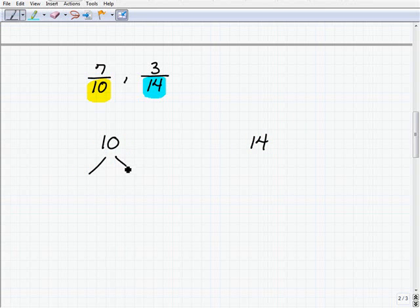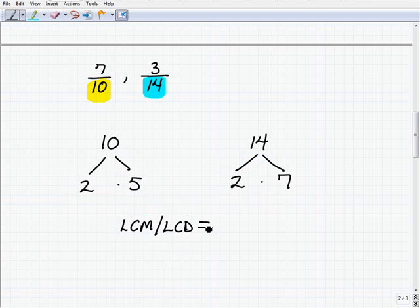All right, so 10 prime factors as 2 times 5 and 14 prime factors as 2 times 7. Okay, so our LCM or LCD in this case, because we're talking about the denominators, same thing. It's going to be, all right, we need a 2. Okay, we have a 2 here, but I only need one 2 represented in the highest power. Being that they're both 2 to the first, I just need a 2. I need a 5 here. And I also need a 7.